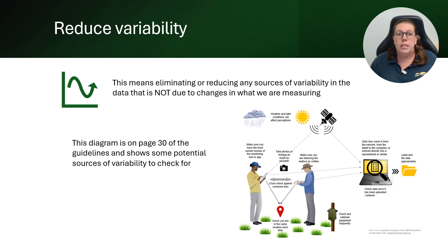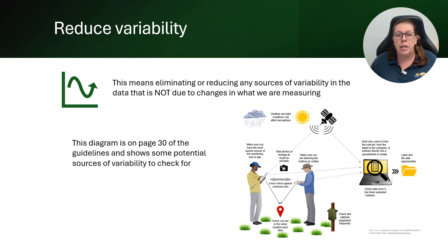As another example, if we set up a monitoring plot and did a first round of monitoring, then came back a year later but didn't monitor on the exact same plot, we would have introduced variation in our data because there'll be differences between the first plot and the second one even if they're close together. As a final example, if we're using specific equipment to take measurements, we need to make sure that equipment is working properly — if you took a whole lot of measurements and then realized the equipment hadn't been calibrated properly, all of those measurements can't be used as they're not correct. Ultimately, it's up to you as the person planning and undertaking the monitoring to identify the potential sources of variation and manage them.